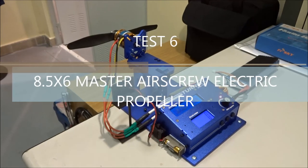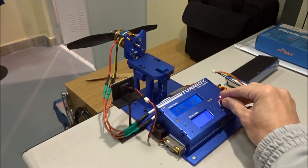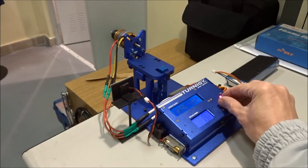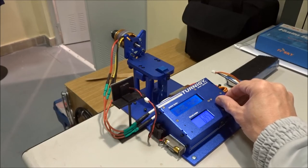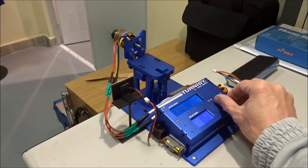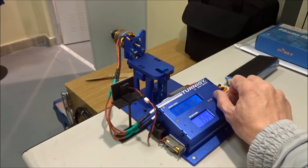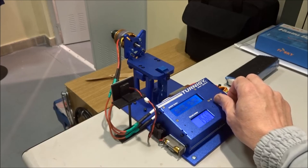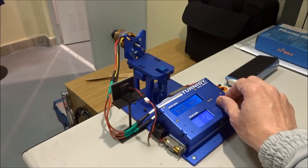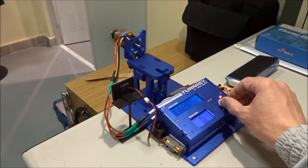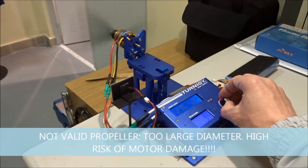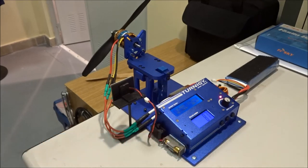This is an old friend, it is a Master Airscrew propeller. Maybe it is too big. It gives a maximum thrust of around 1.6 kilograms and for 1.1 kilograms it is 21-22 ampere.